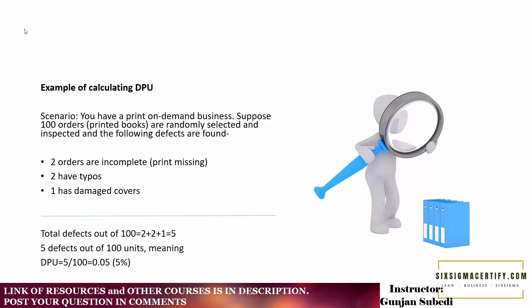So the total defects out of 100 orders is the sum of the two defects of the print, two defects of the typos, and defects of the covers, so the total defect is five. Here we found five defects out of the hundred unit sample.